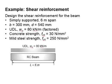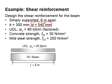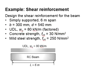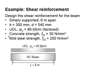Let us try an example to design the shear reinforcement of a beam. The beam is simply supported with a six-meter span, a beam width of 300 mm, and a depth of 540 mm. It is subjected to a UDL of 80 kilonewton per meter, which is a factored load. The concrete strength is 30 and the steel strength is 250; mild steel is being used as the shear link.